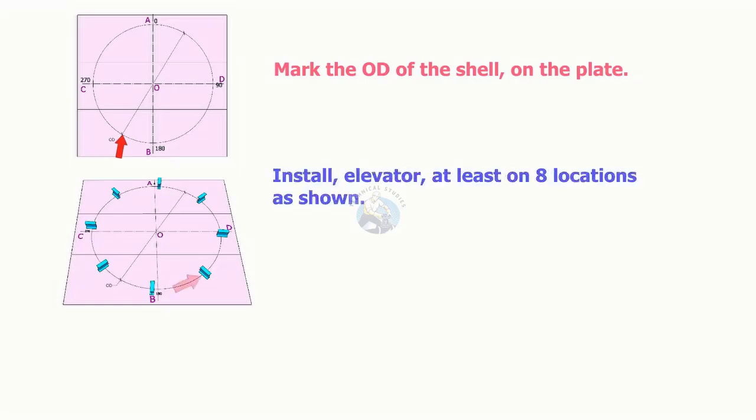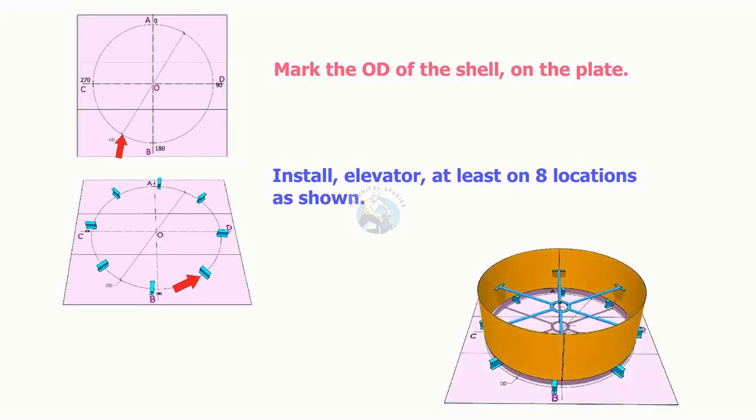Tack weld elevators on the circle, as shown. The height shall be 100 millimeters or above. Put the bottom shell exactly on the circle, on the elevator.